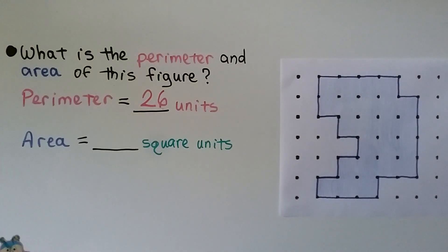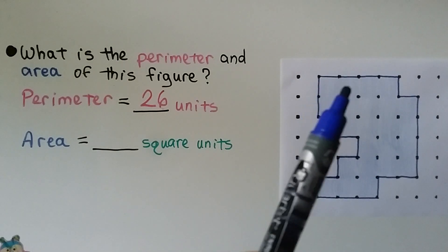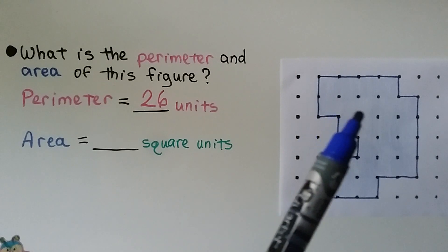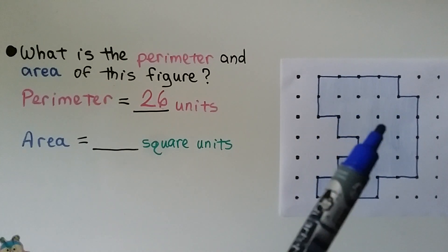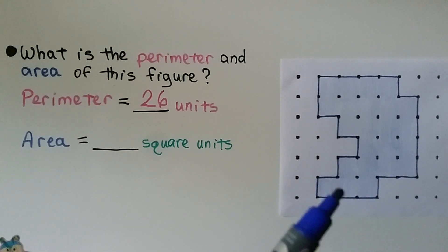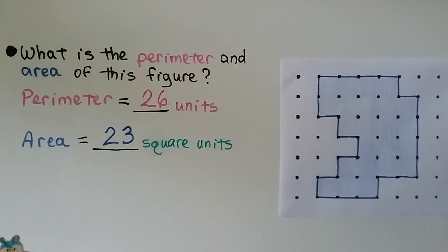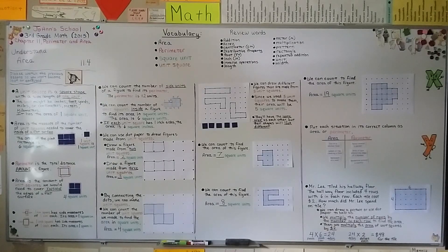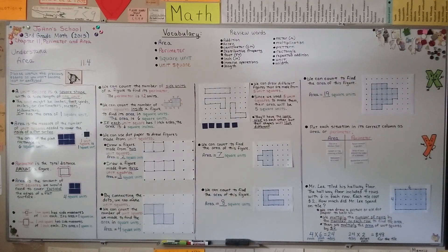Now what is the area in square units? We count the inside squares: one, two, three... twenty-three. This figure is 23 square units. We can connect the dots and make 23 squares inside. Remember, the area of a figure is how many squares we can fit inside of it and they have to be connected. In our next lesson, 11.5, we'll talk about finding the area in square centimeters and square inches. Have a wonderful day — see you next time!